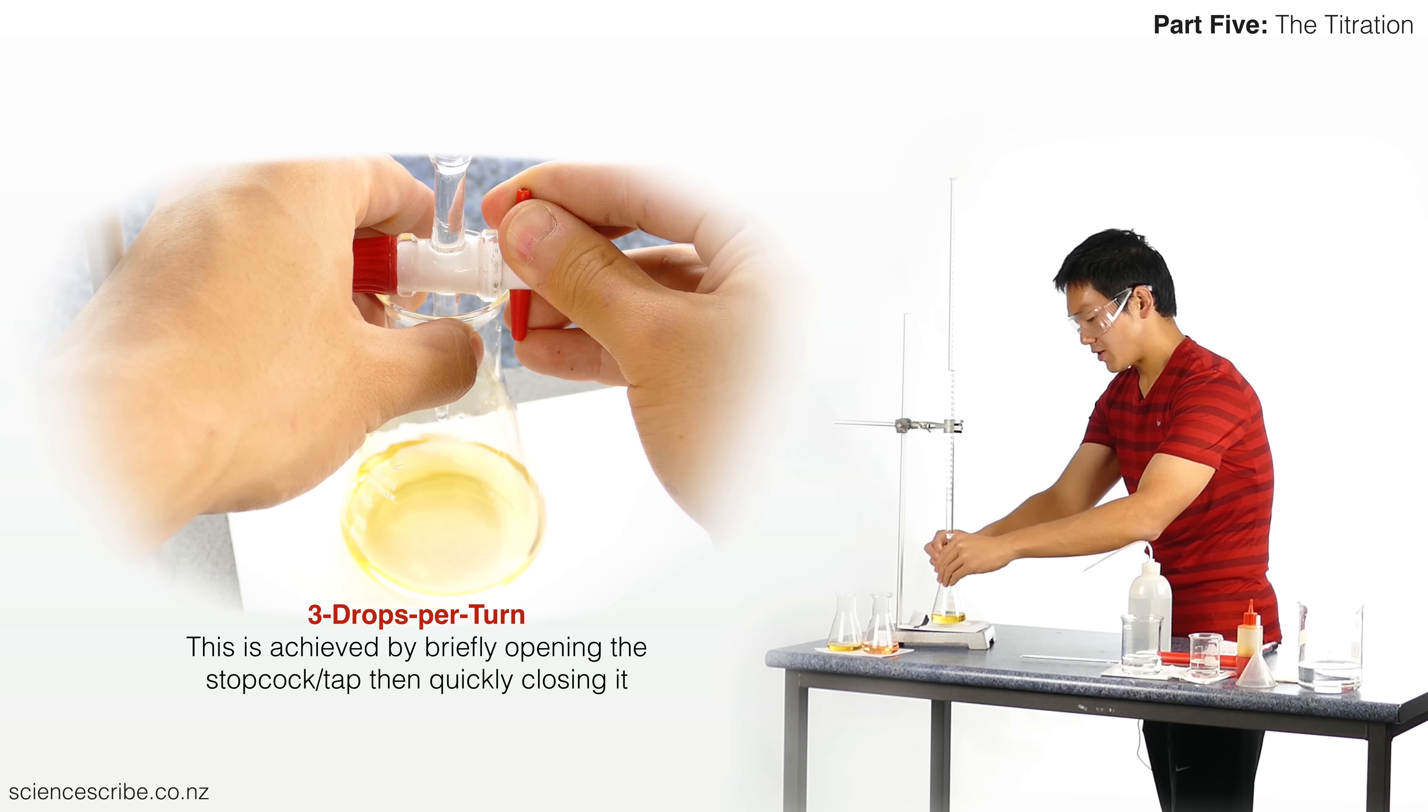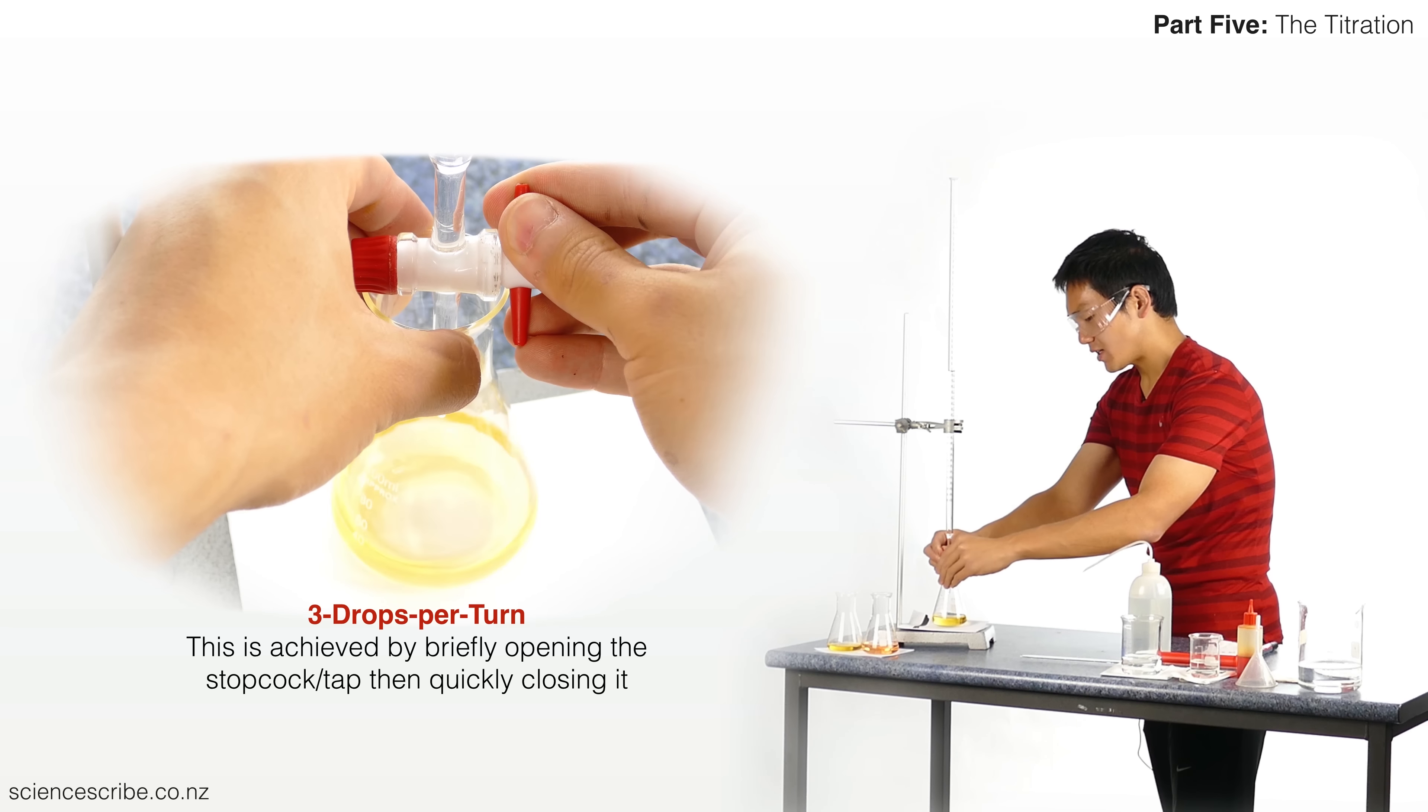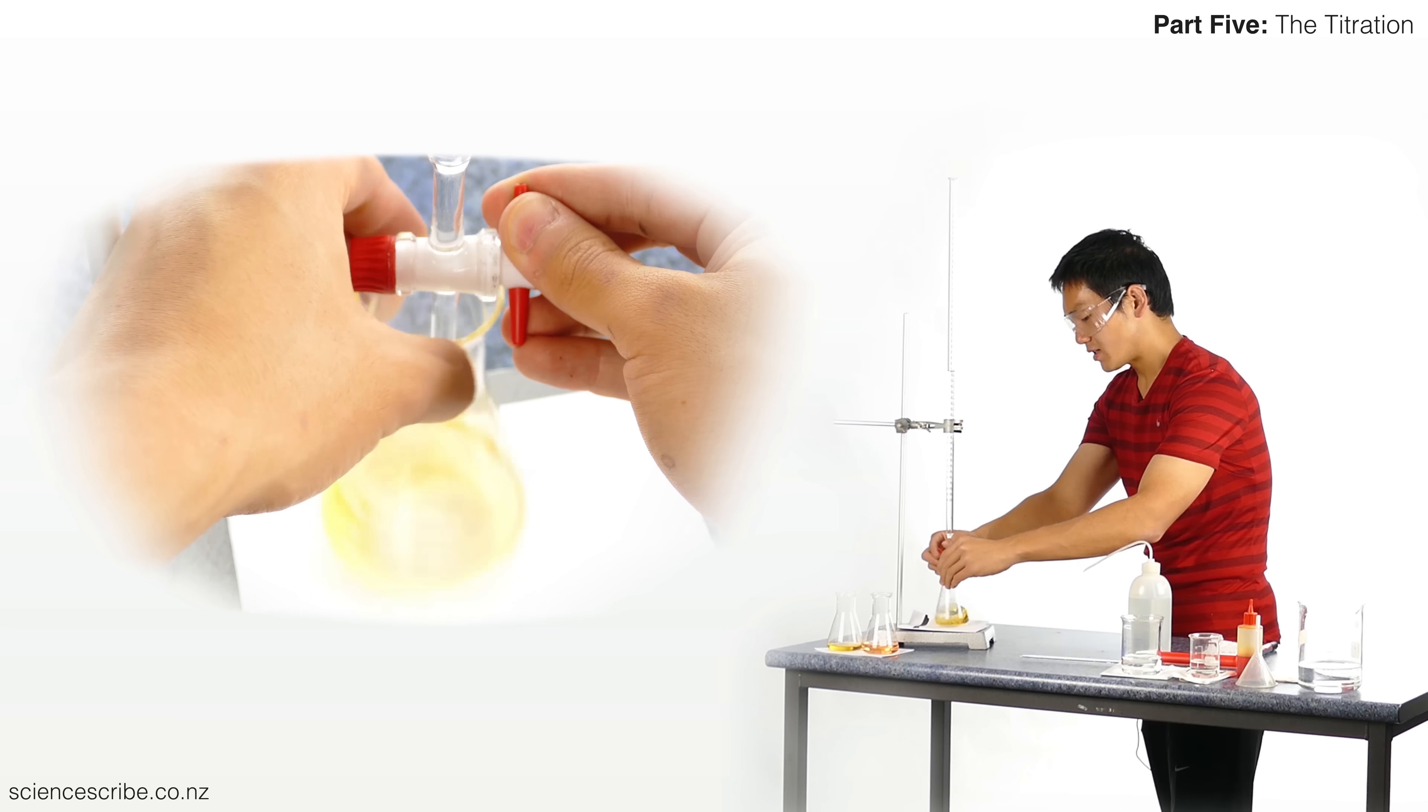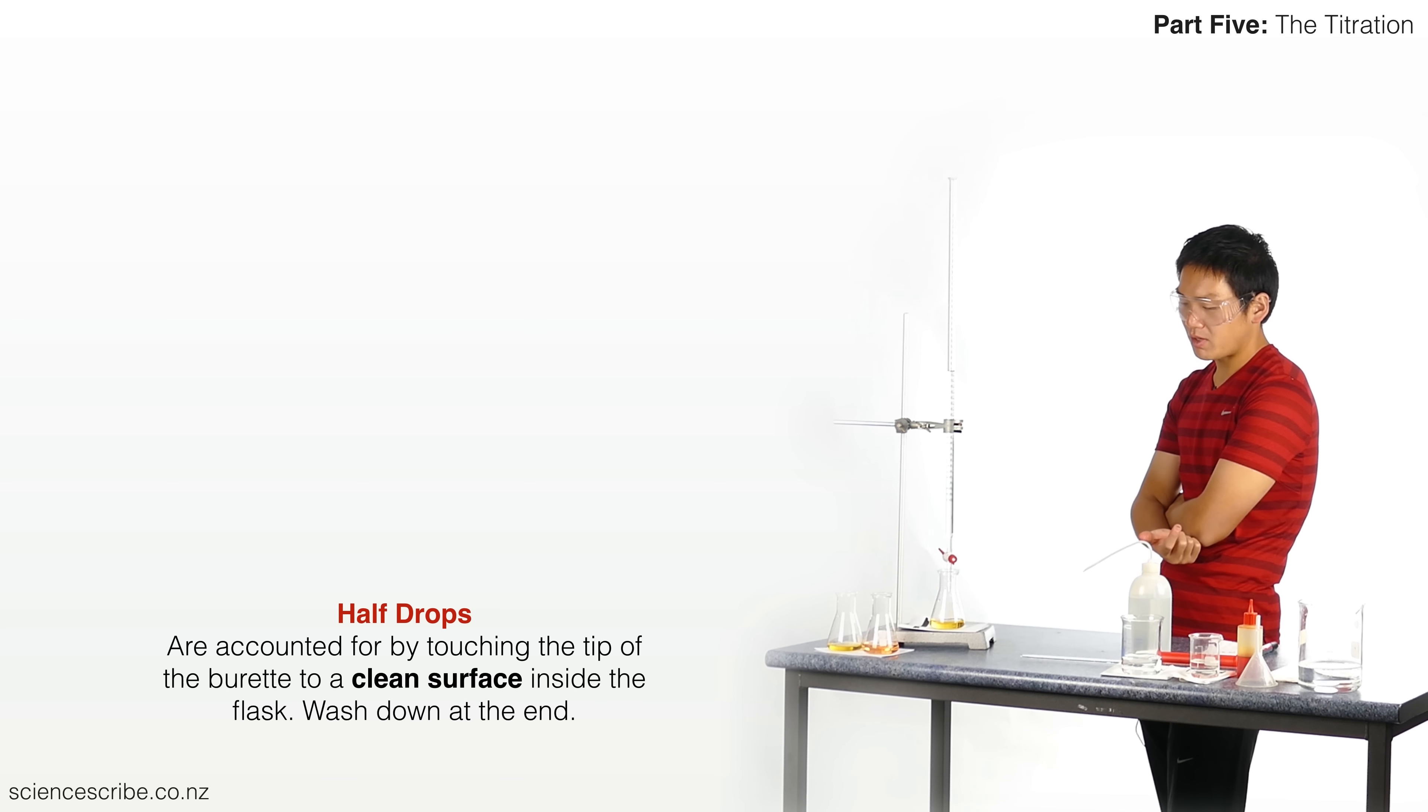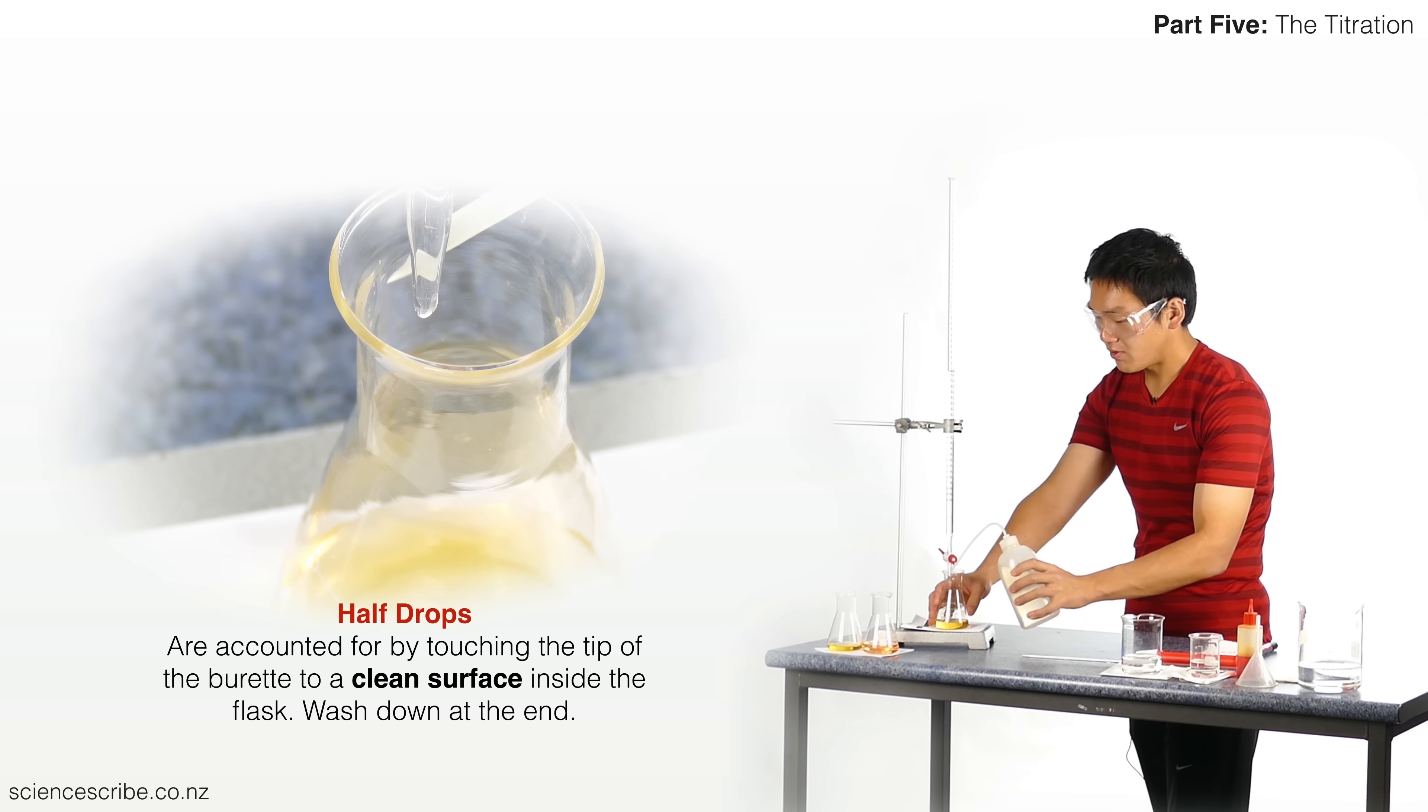I'm going for three drops at a time, and what I'm going to do is pay very special attention to how long it takes for that pink color change to dissolve or disappear back to yellow. It's taking a lot longer. I still have a drop hanging off the end of my burette, so at this point I'm thinking maybe I should start adding just a single drop at a time. I've got a half a drop hanging off, so what I want to do is just touch that to the clean surface on the side of the conical flask and then I'm going to rinse that down.